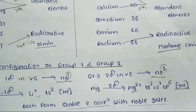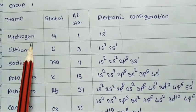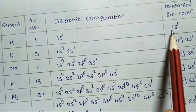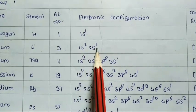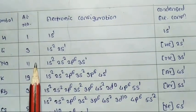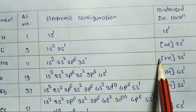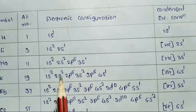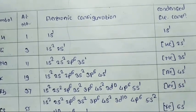The detailed electronic configurations of group 1 are: Hydrogen (Z=1): 1S1, condensed 1S1. Lithium (Z=3): 1S2 2S1, condensed [He] 2S1. Sodium (Z=11): 1S2 2S2 2P6 3S1, condensed [Ne] 3S1. Potassium (Z=19): 1S2 2S2 2P6 3S2 3P6 4S1, condensed [Ar] 4S1.